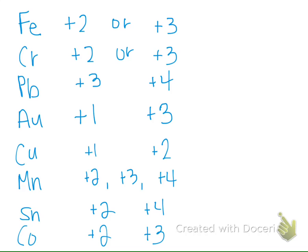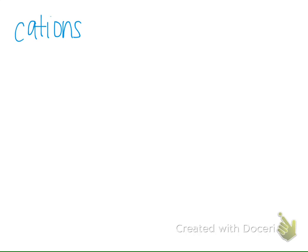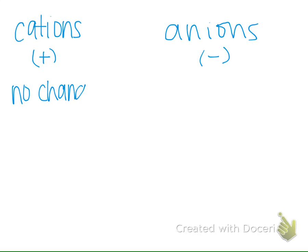Turn to page 221 and take a look at that table. Do you notice a difference between positively charged ions and negatively charged ions just in terms of their name? All the negatives end in -ide. Cations, which are positively charged, don't change their name at all. Anions, which are negatively charged, change their name to end in -ide.